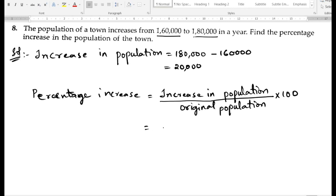So increase in percentage is nothing but 20,000 by original population is 160,000 times 100.